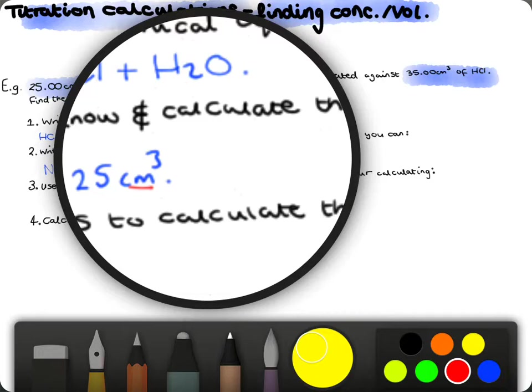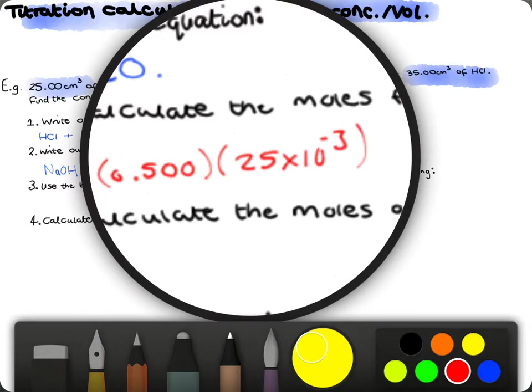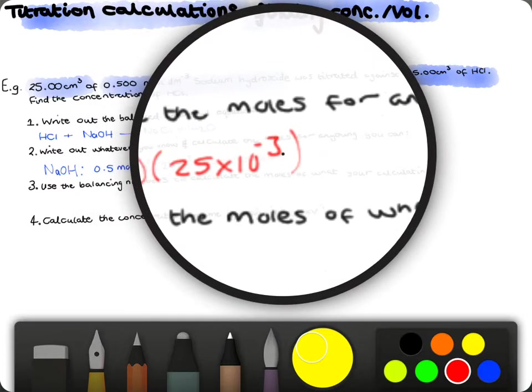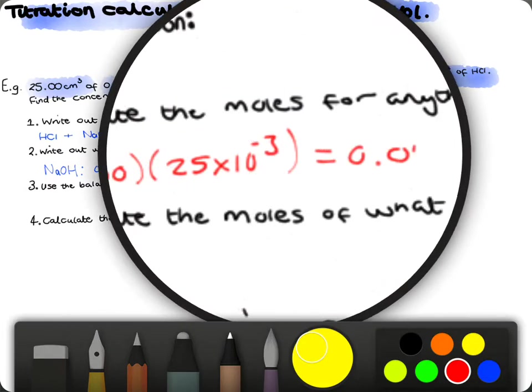So, doing that, we get the 0.5 times this by our volume, which is 25 times 10 to the minus 3. And this gives us our number of moles, which will be 0.0125.